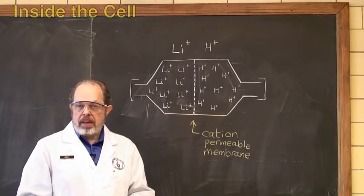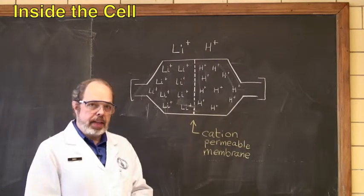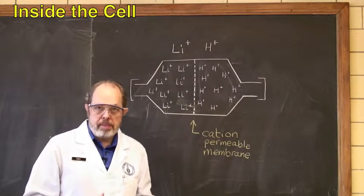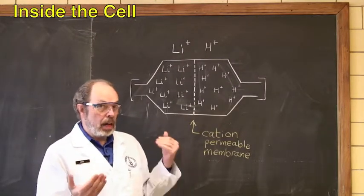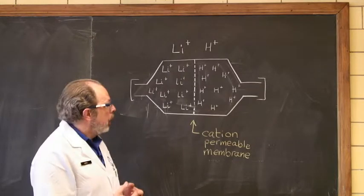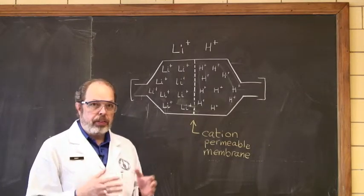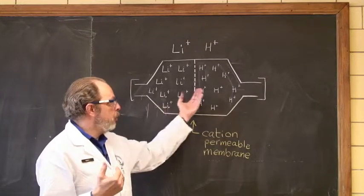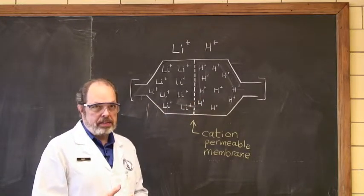The cell that you have contains a cation permeable membrane in the middle. This means that the anions aren't going to be able to get through. You will be actually tracking the passage of metal cations through the membrane itself.